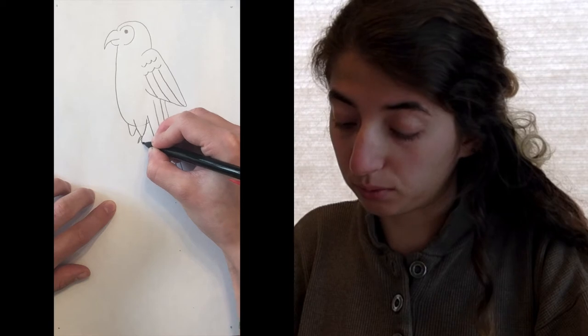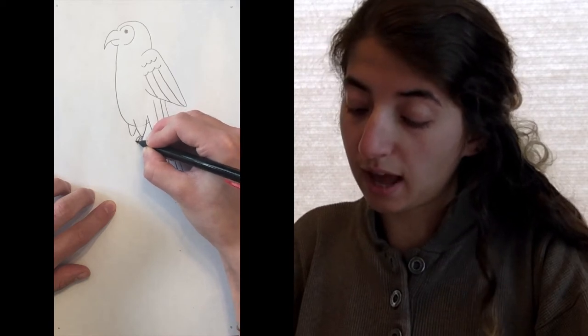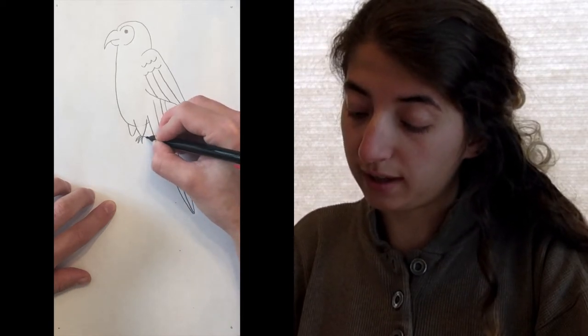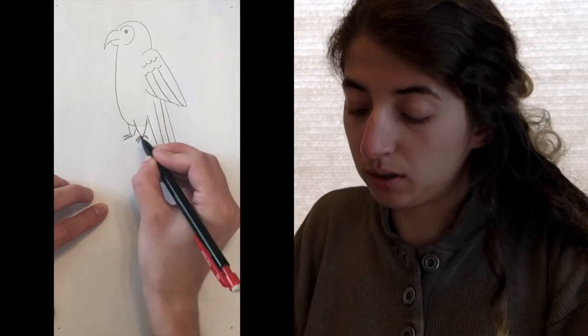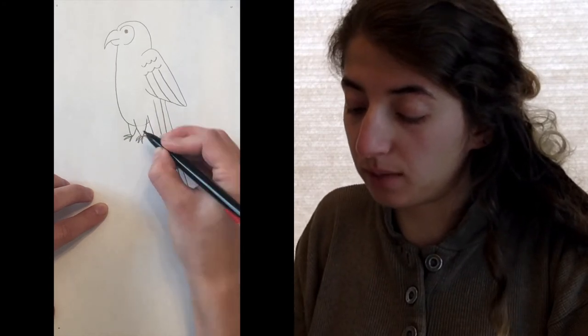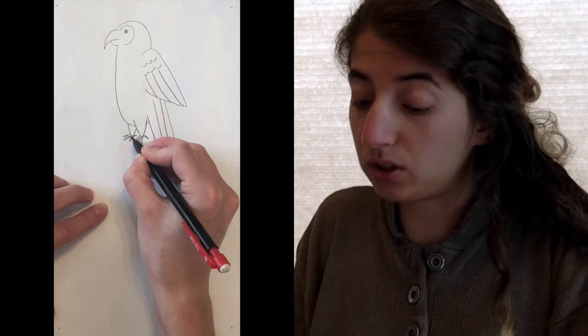There's some claws going forward and then they actually have one claw in the back that's going backwards, which is a special thing that some animals have like backward toes. Pretty funny but it helps them hold on to tree branches.